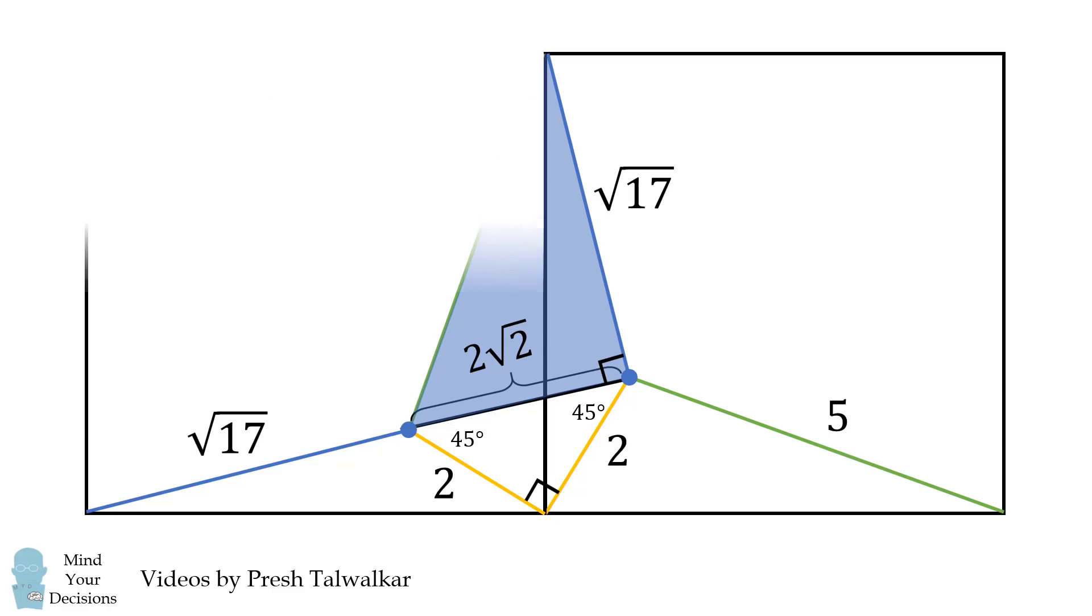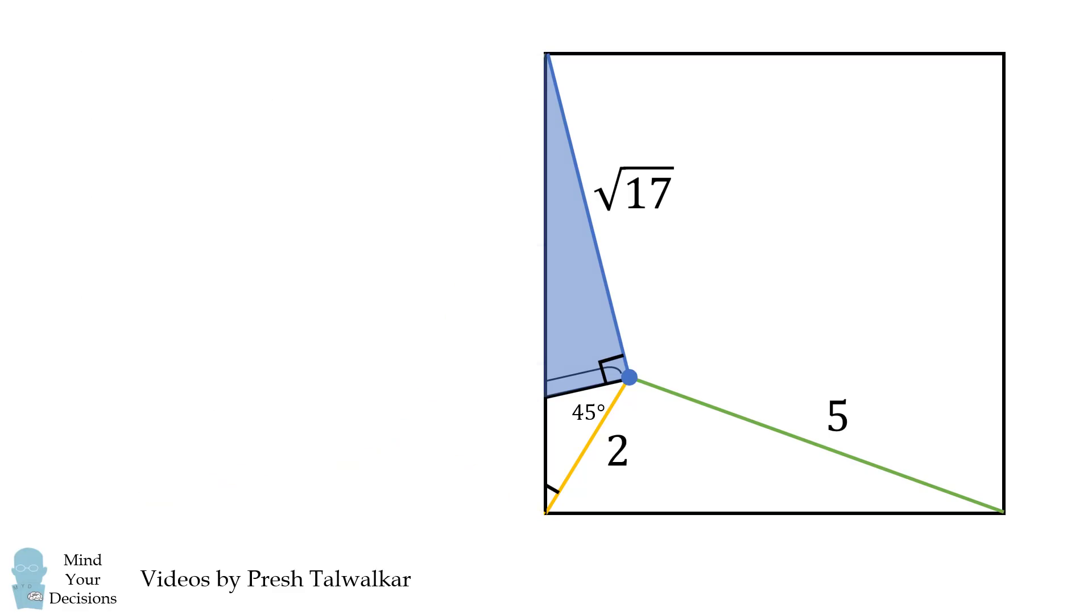Now let's erase all the parts on the left. Let's focus just on the right. Right here, we have an angle that's 45 degrees plus 90 degrees, and that's equal to 135 degrees.